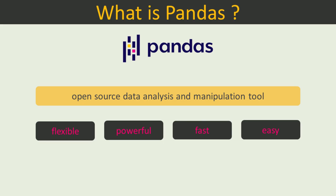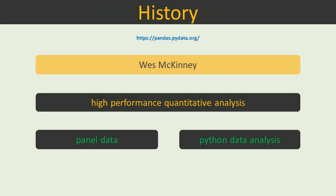To learn Python, you can watch our Python videos in our channel. Let's now look into the history of Pandas. The official site for Pandas is pandas.pydata.org. Pandas was created in the year 2008 by Wes McKinney as a tool to perform high performance quantitative analysis on financial data. As per wiki, the word Pandas is derived from an econometric term called panel data. Pandas also stands for the expression Python Data Analysis Library.